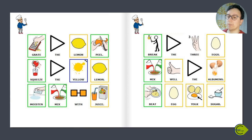Grate the lemon peel, squeeze the yellow lemon, moisten and mix with juice. Break the 3 eggs.